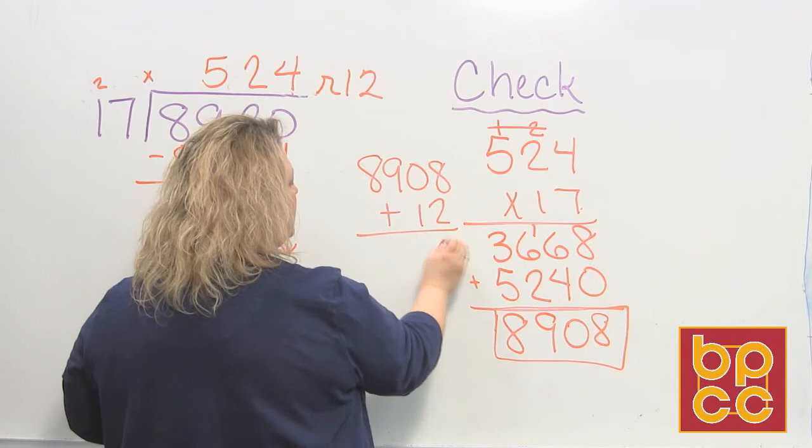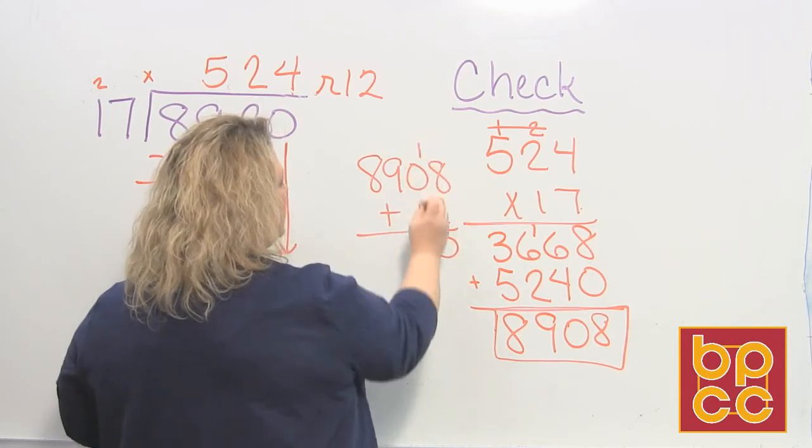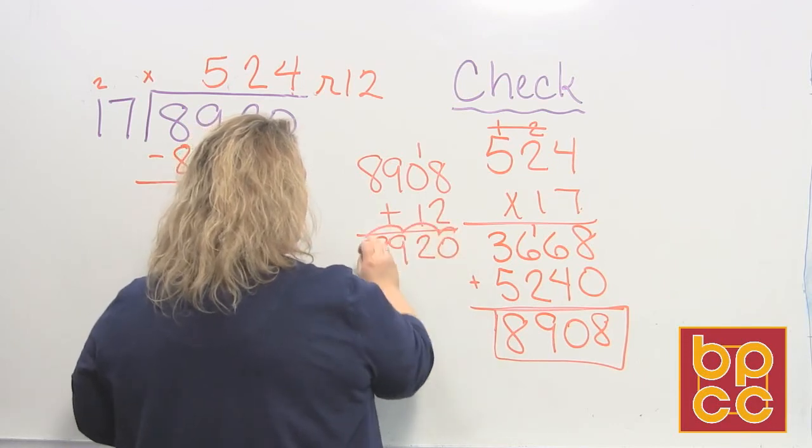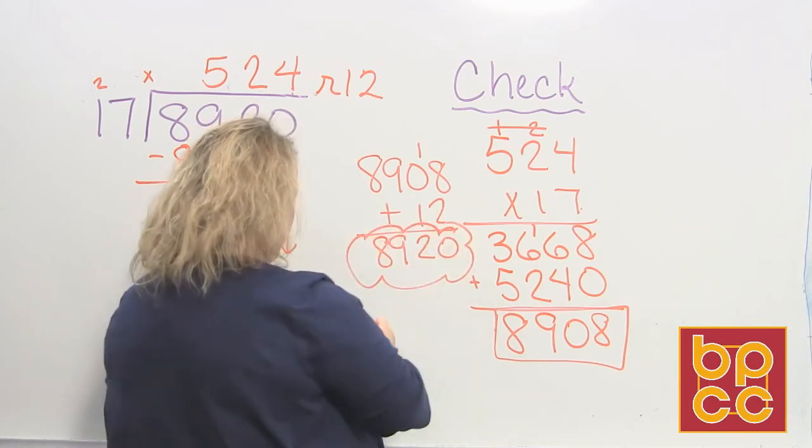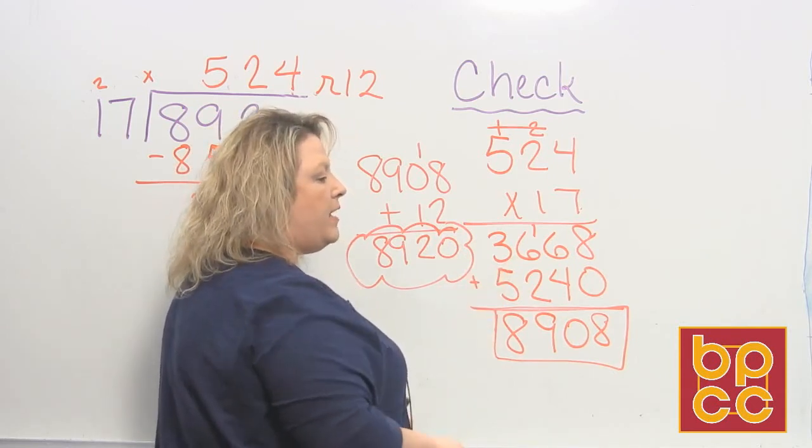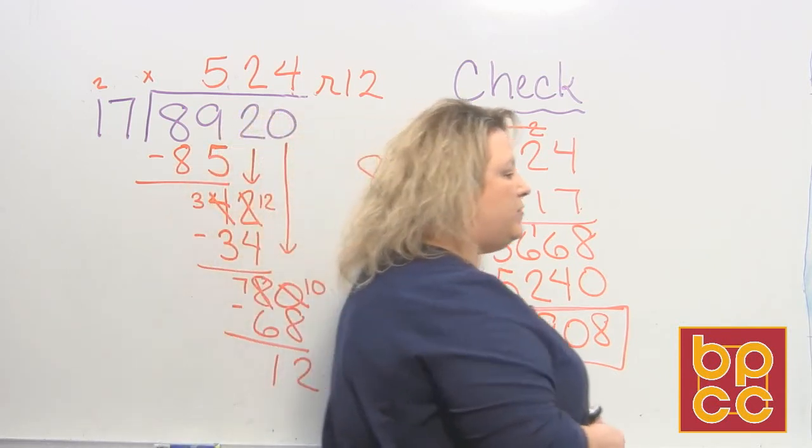8 plus 2 is 10. 1 plus 1 makes 2. And bring the other digits down because I didn't have to do anything to them. And I notice that I get 8,920. And that's exactly what I started with. So that way you can check and make sure that you did it correctly.